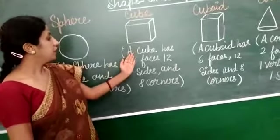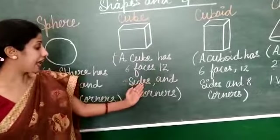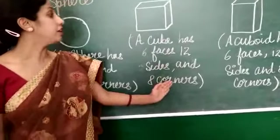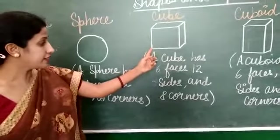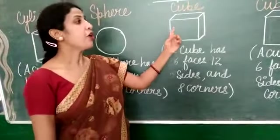Then cube. A cube has six faces, twelve sides, and eight corners.